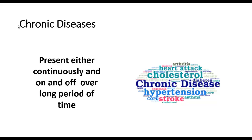A chronic disease is one that is always present in one form or another. Asthma is an example of this. A person who has asthma isn't always suffering from it — it only happens under certain circumstances — but it is chronic. It continues to stay with the person, remaining with them over time.